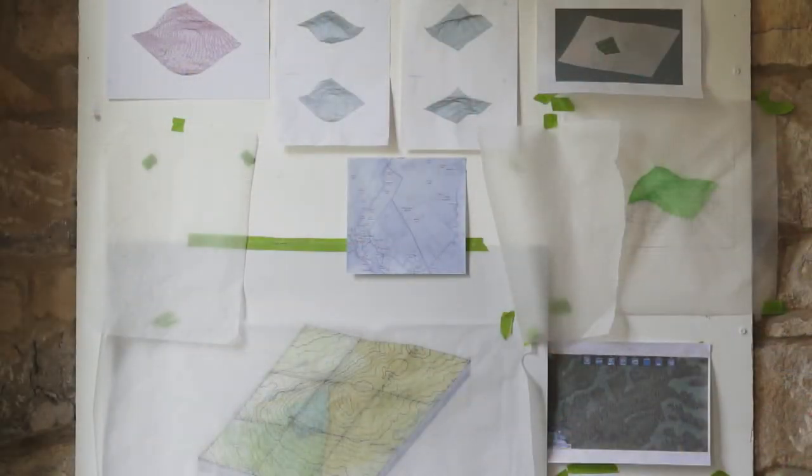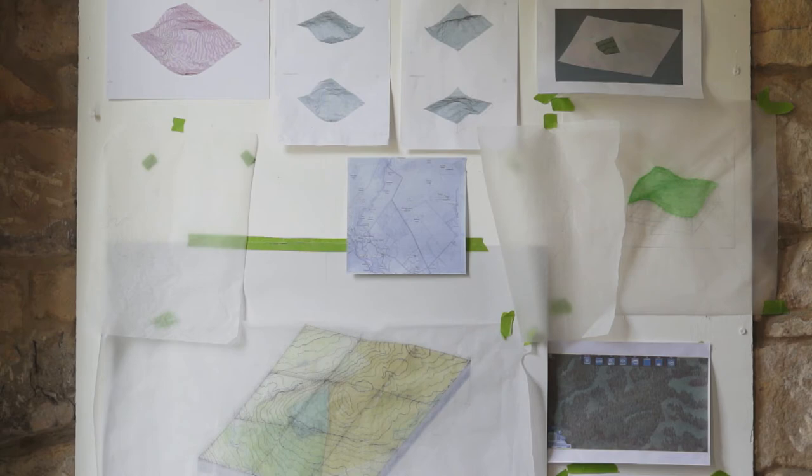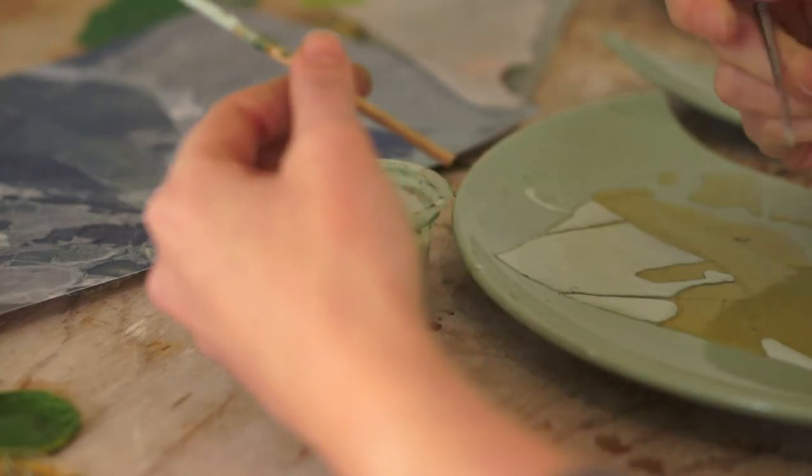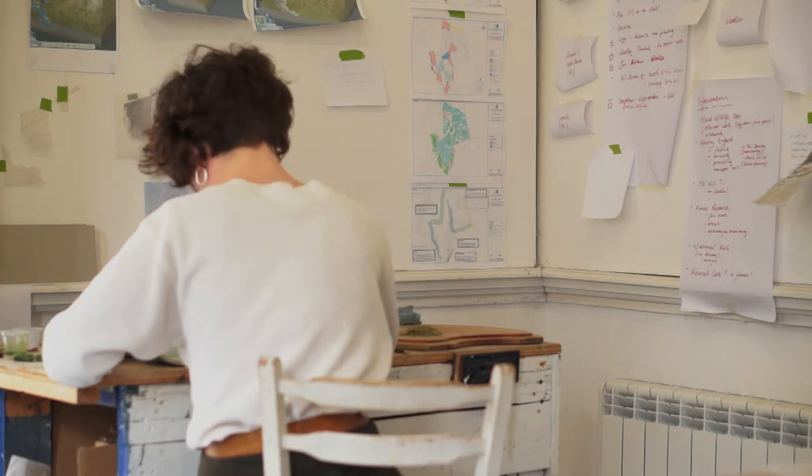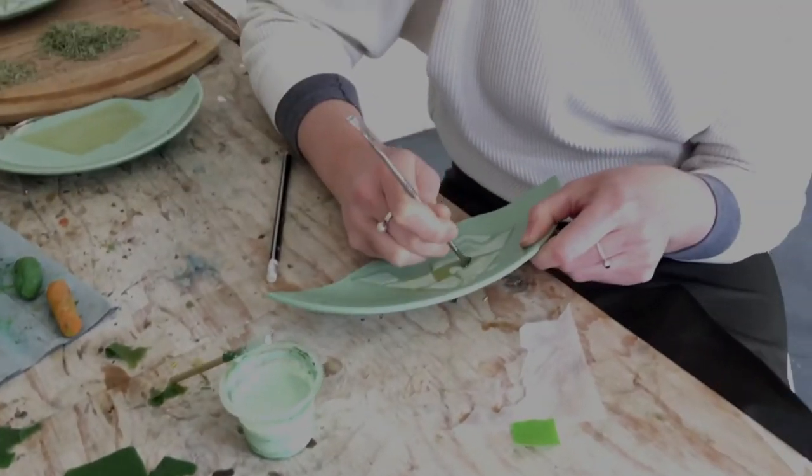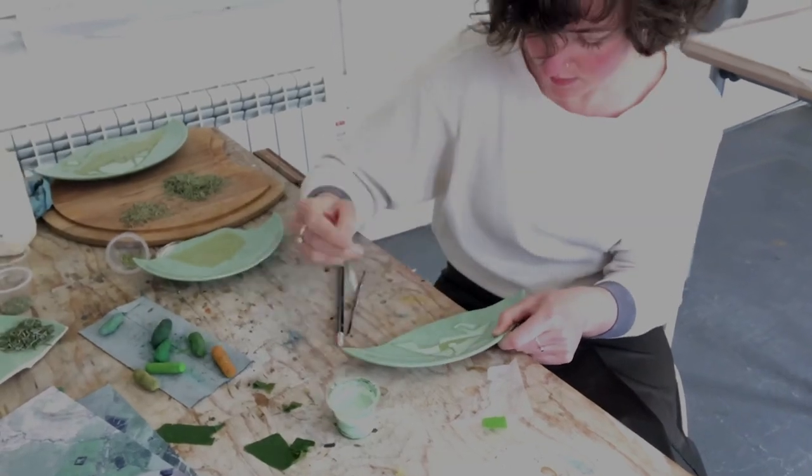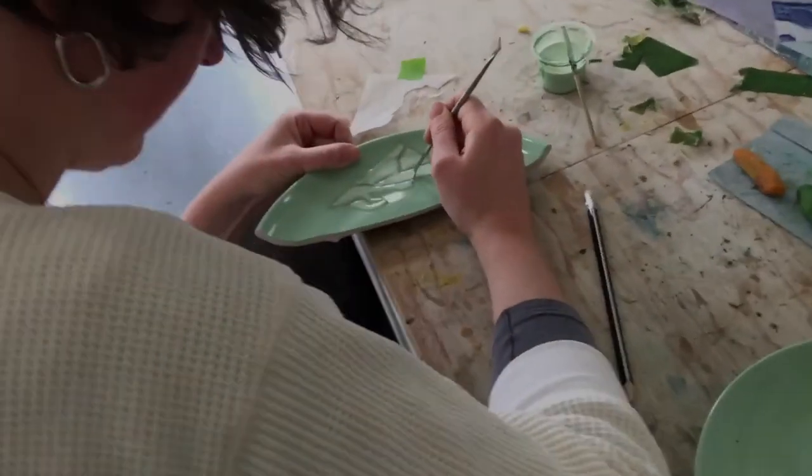And then I also have a three-dimensional model, a digital 3D model on the computer. So all of these three models were made by tracing the same contour lines again and again and again. So I ended up learning the shape of the hill and the valley really well because I must have traced over each individual contour line maybe about 12 to 15 times.